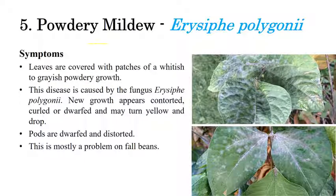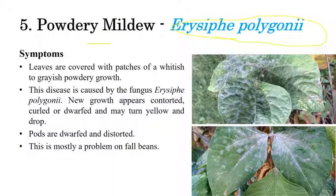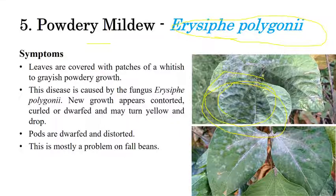The next disease is powdery mildew, caused by Erysiphe polygoni — an important disease in beans. The name itself indicates: whitish powdery growth or grayish powdery growth — mostly whitish powdery growth — can be seen on the surface of leaves.